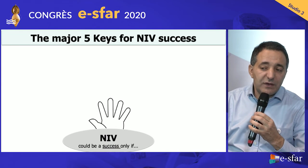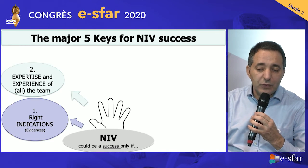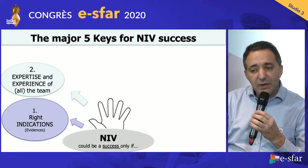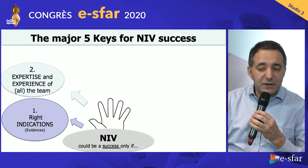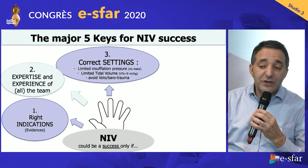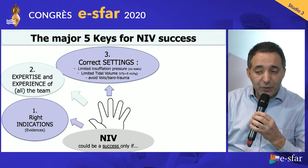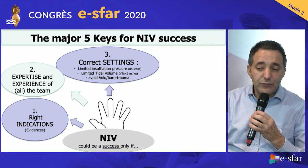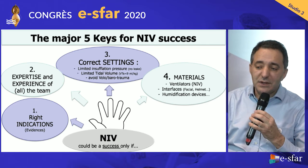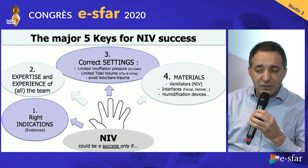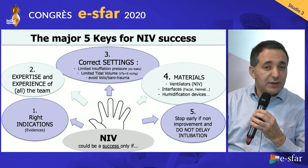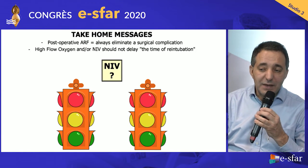My five major keys for NIV success: first, the right indication — Antonio will discuss this. Second, the expertise or experience of the team — this is a major issue. Third, the correct setting, as you should probably avoid high ventilation pressure and high tidal volume to avoid barotrauma and discomfort. Fourth, the material — including ventilators, interfaces, and humidification devices. And fifth, knowing to stop early if there is no improvement and not to delay intubation.